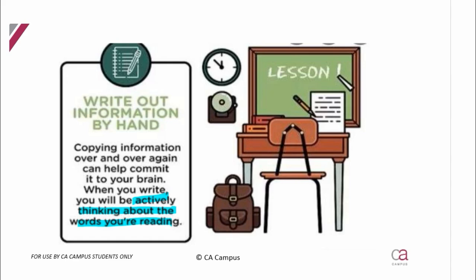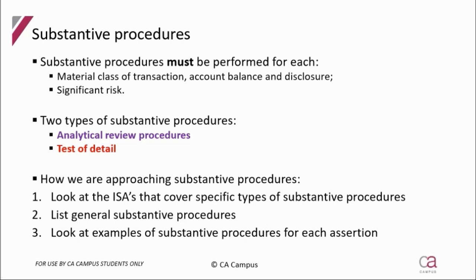Substantive procedures: you have to do substantive testing for any material balance, class of transaction, or disclosure. And you have to do substantive testing if there is a significant risk associated with a transaction, class of transactions, account balance, or disclosure. ISA 330 told us we had to do substantive procedures for those. That's why when we decide to test controls, we follow a combined approach — because we would only be testing material classes of transactions, account balances, and disclosures, which means we will have to do substantive testing alongside those tests of controls.